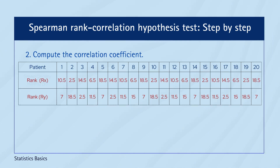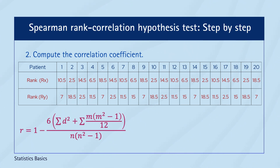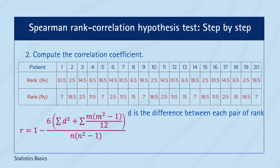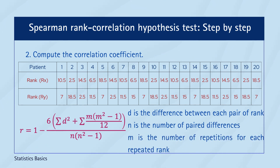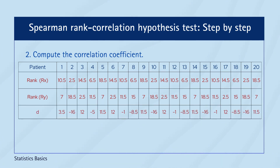To calculate the Spearman's Rank Correlation Coefficient, use the following formula, where d is the difference between each pair of ranks, n is the number of paired differences, and m is the number of repetitions for each repeated rank. For each pair of data points, find the difference between their ranks.